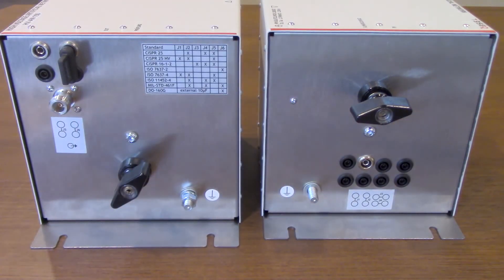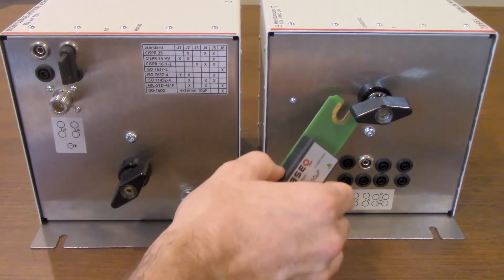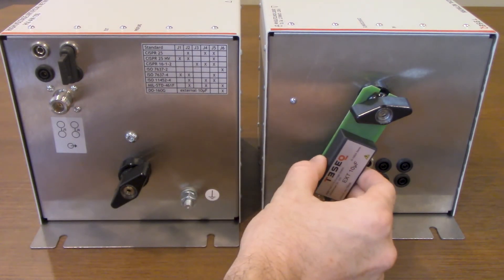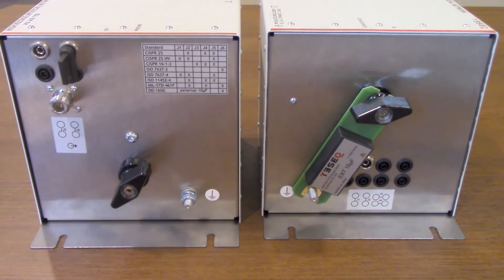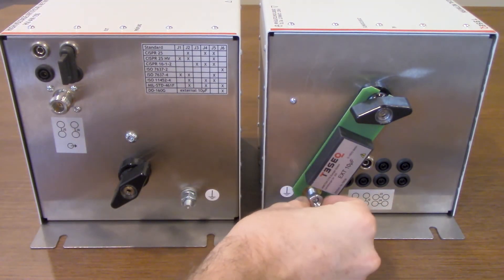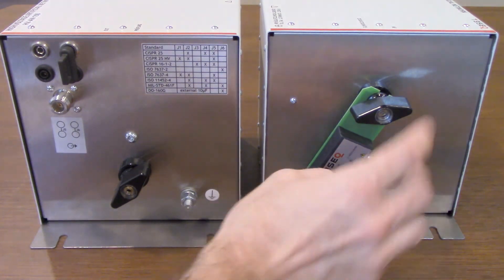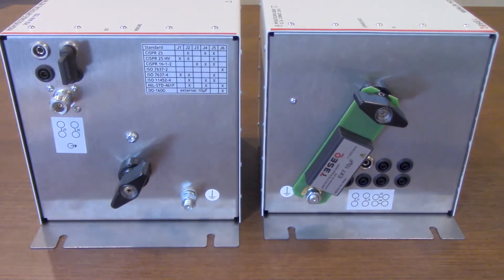Those have been removed and we're going to put in our 10 microfarad capacitor that's going to be needed for DO 160. That's really cool, it just slides right on and then you use this to ensure you have a good connection, you can obviously tighten these down. So that's about it for setting them for DO 160 with the external 10 microfarad capacitor.